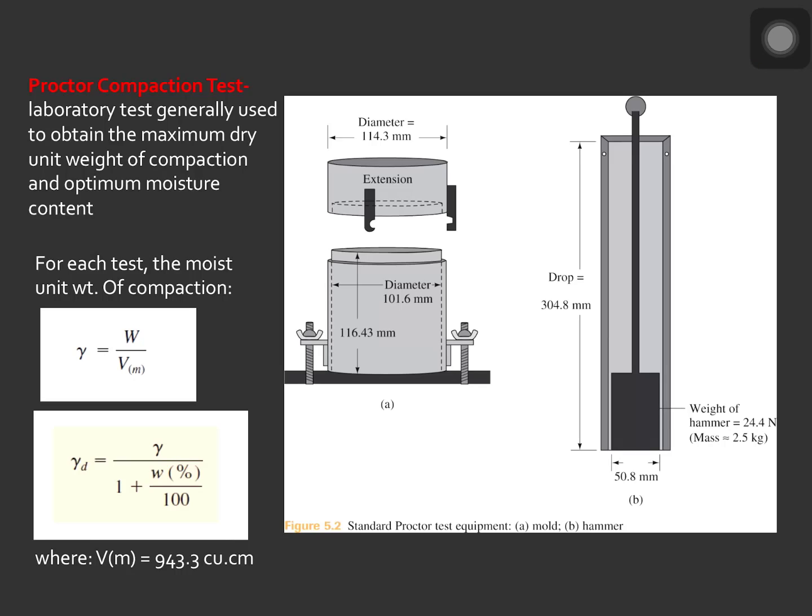Let us talk about the standard proctor test. In the proctor test, the soil is compacted in a mold that has a volume of 943.3 cubic centimeters. The diameter of the mold is 101.6 millimeters. During the laboratory test, the mold is attached to a base plate at the bottom and to an extension at the top, as you can see here in our figure. The soil is mixed with varying amounts of water and then compacted in three equal layers by a hammer.